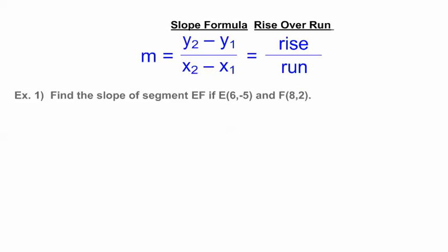Let's solve the first one here. I'm going to go over this one, and then I'm going to do it using rise over run as well. Example one: find the slope of segment EF if E is 6, negative 5, and F is 8, 2. This is the same problem on the previous page. Again, I don't have a graph here, so I'm not going to worry about rise over run right now.